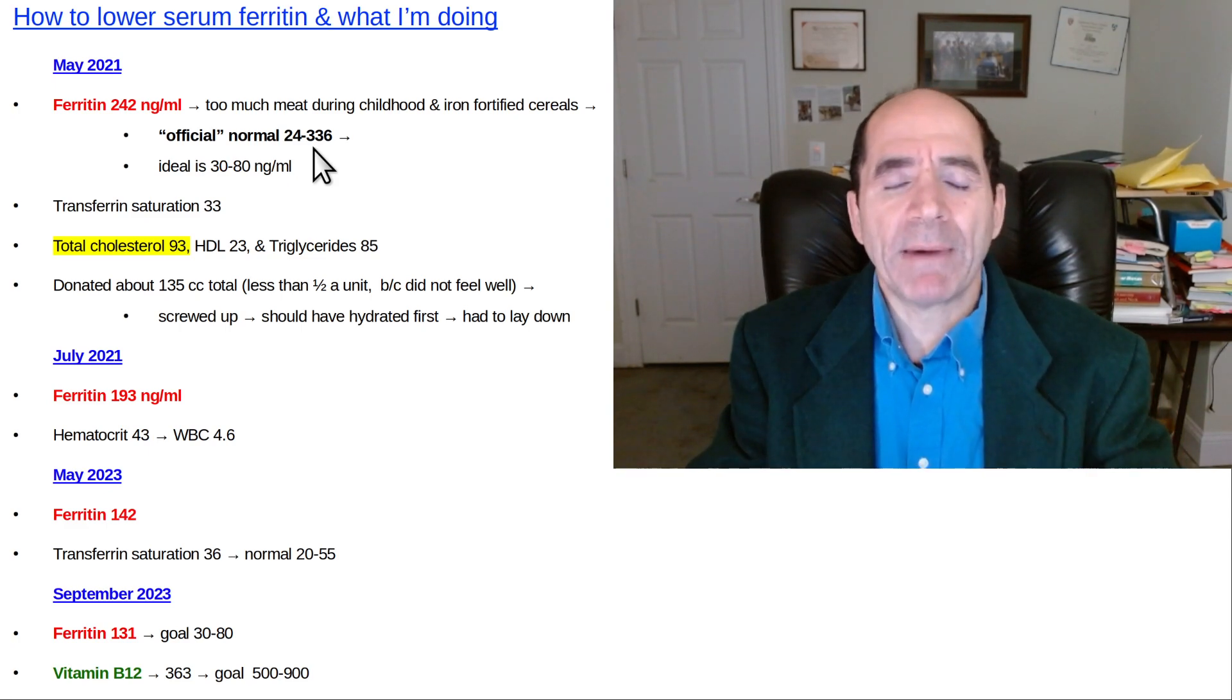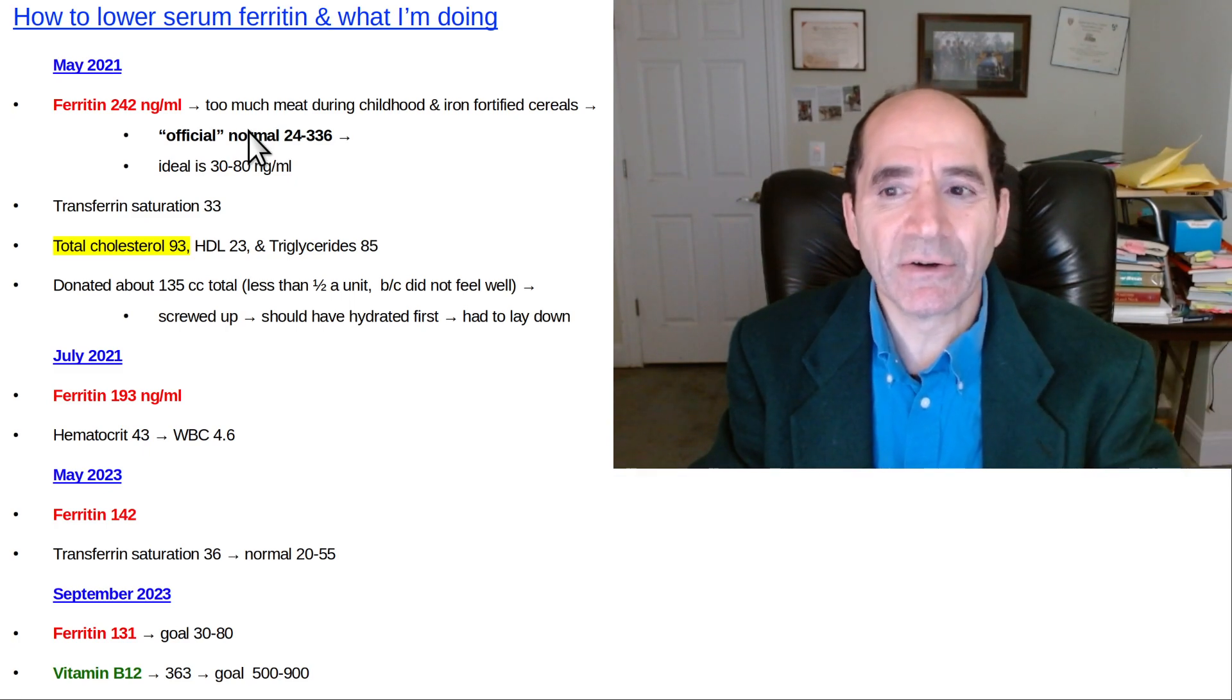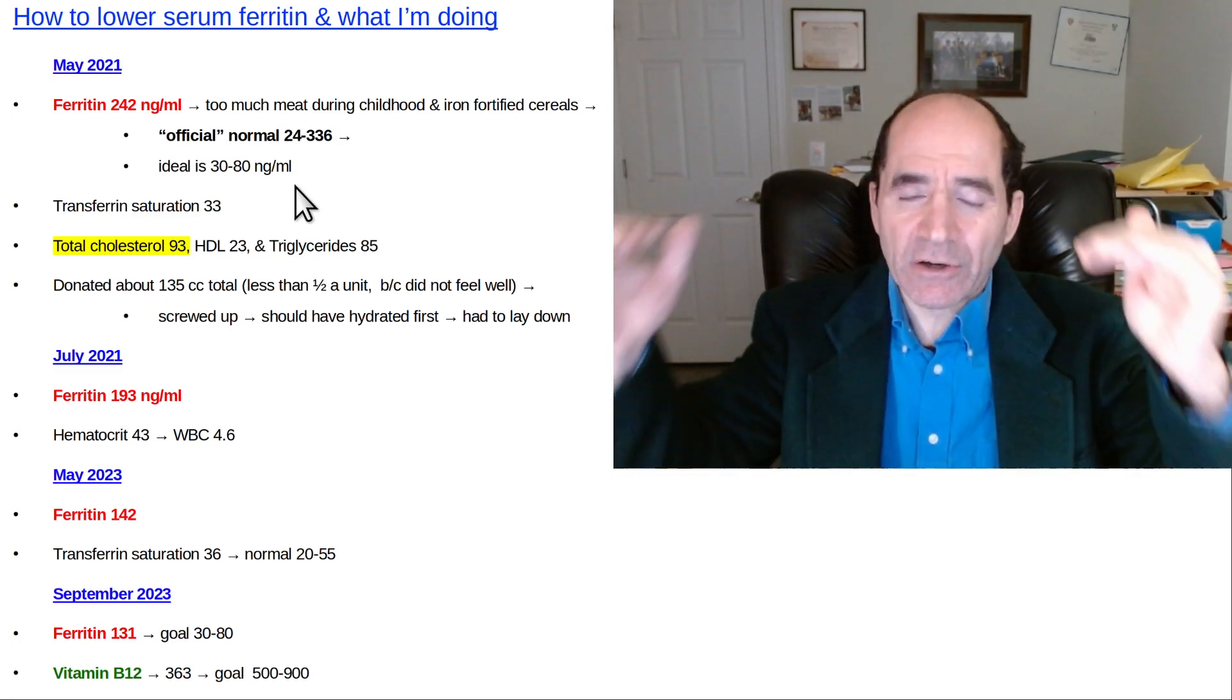I was kind of shocked that my iron was kind of high back in 2021. It was 242, which was considered normal. But I knew that was much higher than 80, which is recommended by the legitimate experts. So I decided to start getting it down.